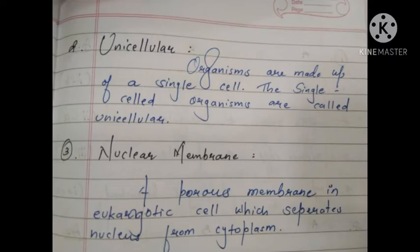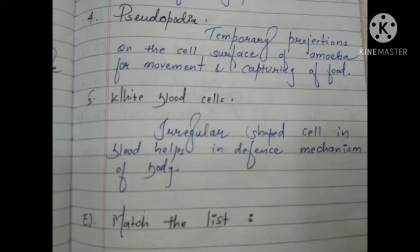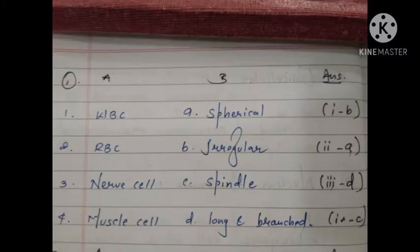Now talking about definitions. First: multicellular organisms are made up of more than one cell. Second: unicellular organisms are made up of a single cell. Third: nuclear membrane is a porous membrane in eukaryotic cells which separates the nucleus from the cytoplasm. Fourth: pseudopodia are temporary projections on the cell surface of amoeba for movement and capturing of food. Fifth: white blood cells are irregularly shaped cells in blood that help in the defense mechanism of the body.